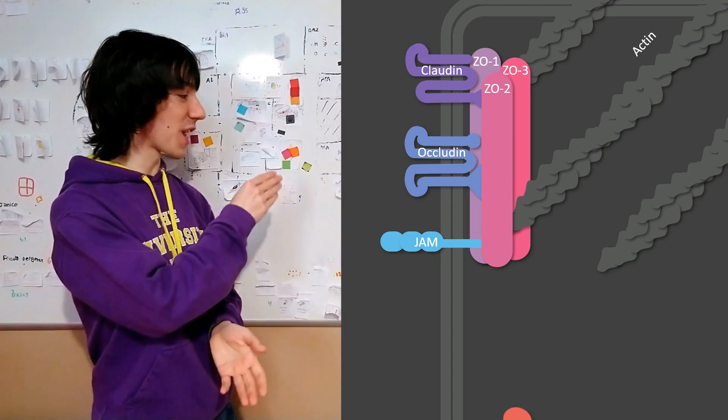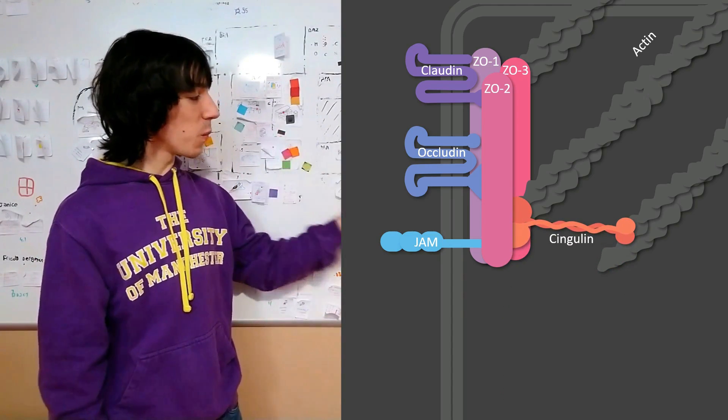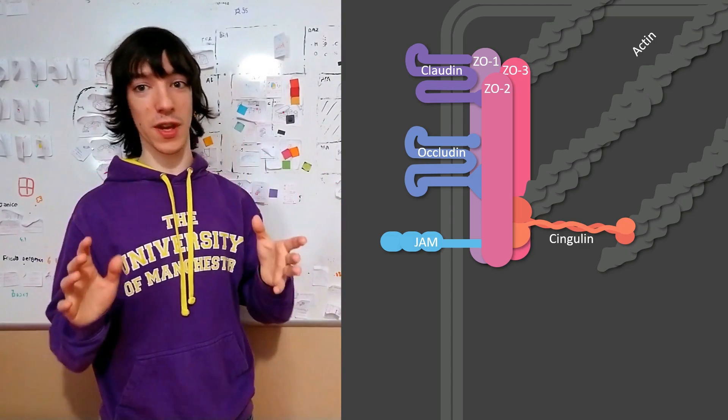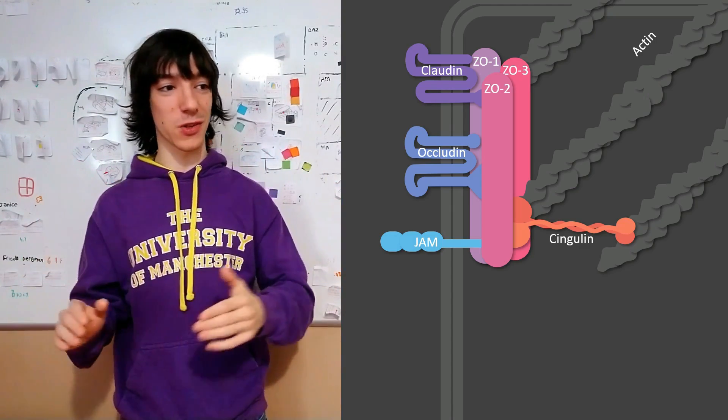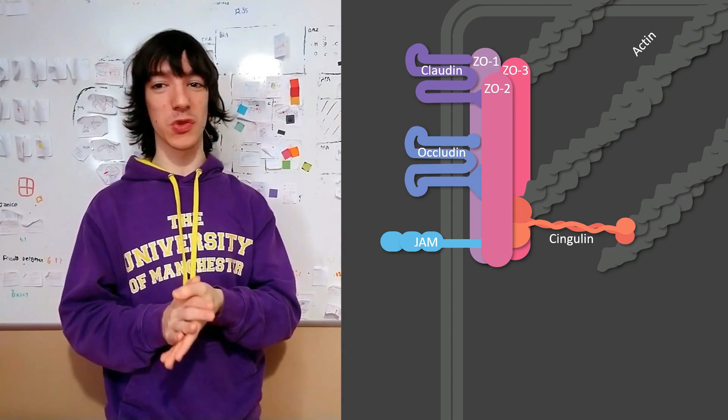Just to mention one, I have chosen cingulin, which connects the zonula occludens proteins with actin microfilaments and also with a bunch of other adapters, regulators and even with microtubules. But again, I'm not going to go into that much detail.